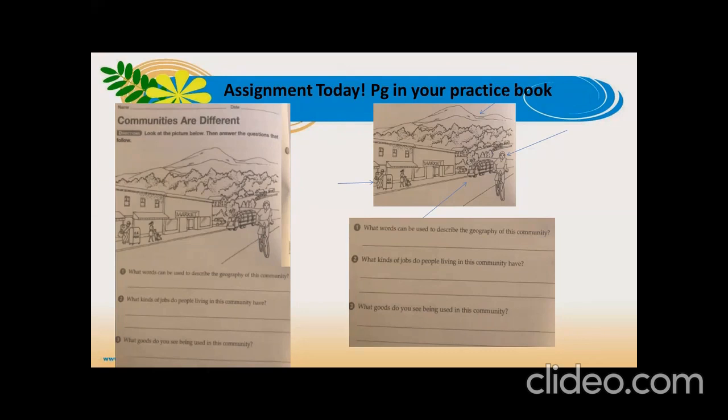The first question is, what words can be used to describe the geography of this community? Think about the climate. Think about the land. Now, how do you know what climate? Note what they're wearing or try to figure out from clues in the pictures of what the climate might be like.